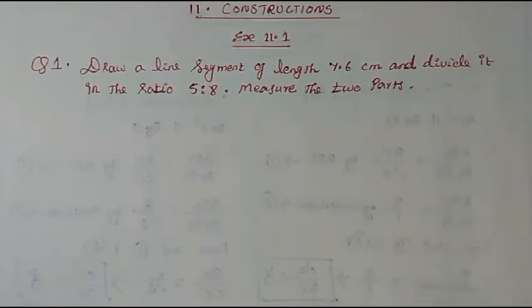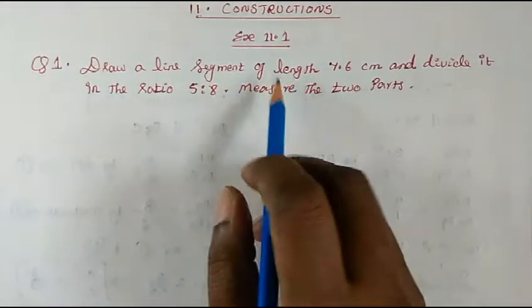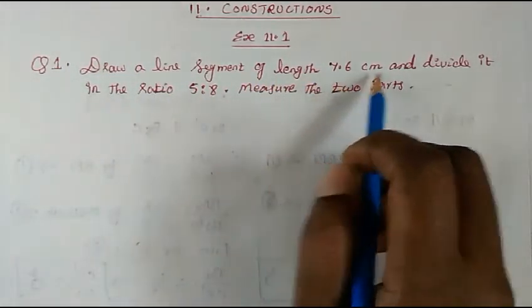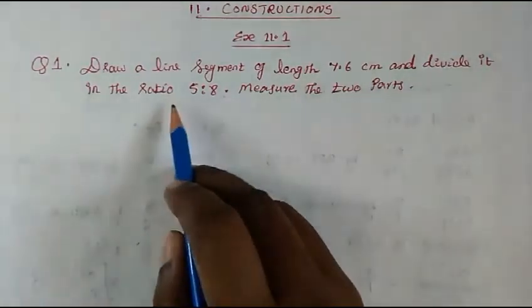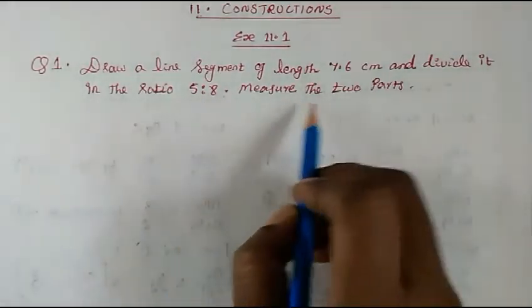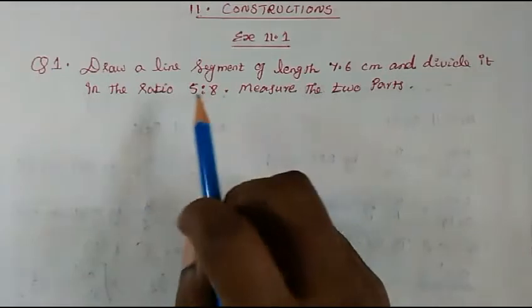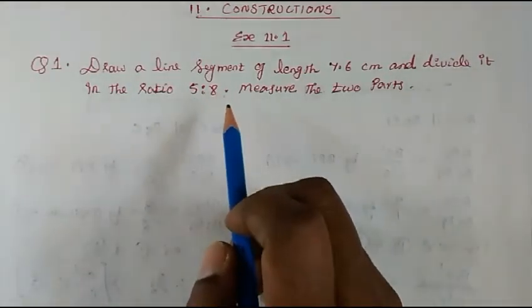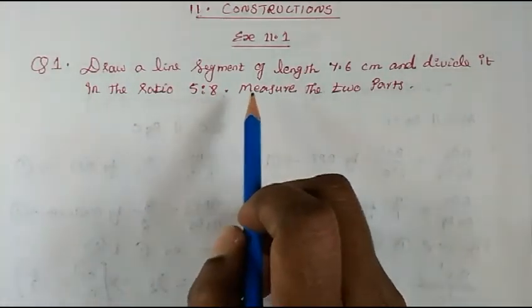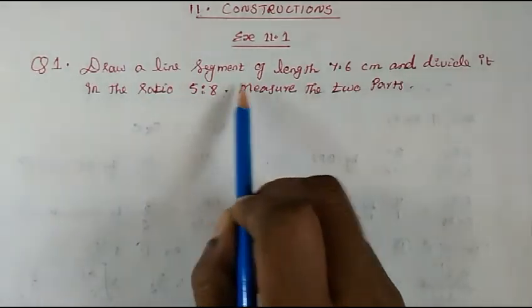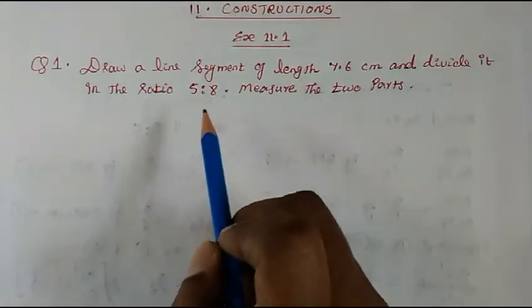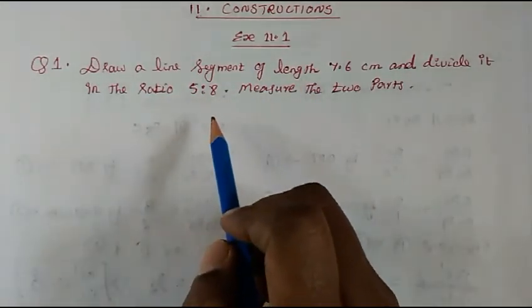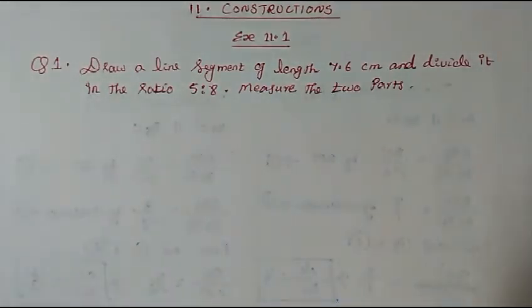Hi everyone, welcome to Mash Math. Today we are going to study Chapter 11 Constructions, Exercise 11.1, Question 1: Draw a line segment of length 7.6 cm and divide it in the ratio 5:8, and measure the two parts. Please go through the introduction Part 1, where I have explained how to divide a line segment into a given ratio.